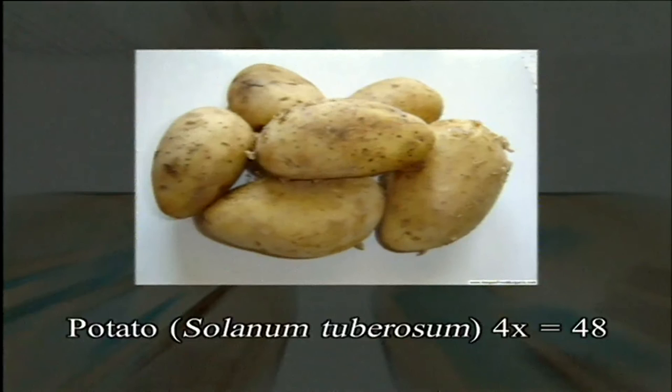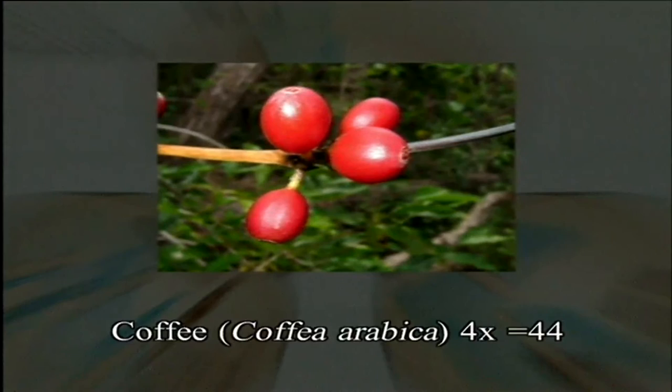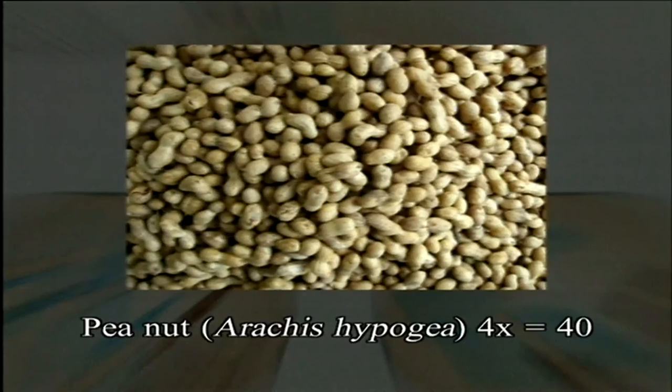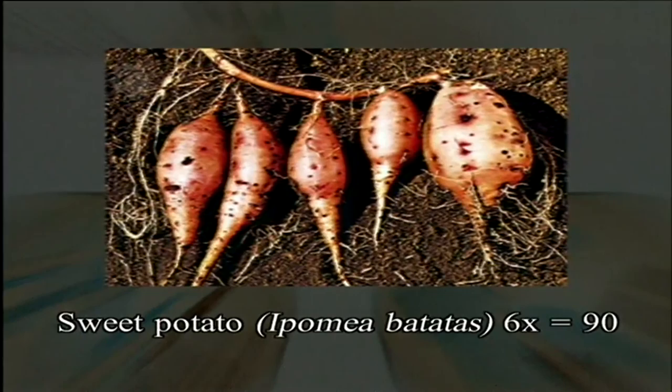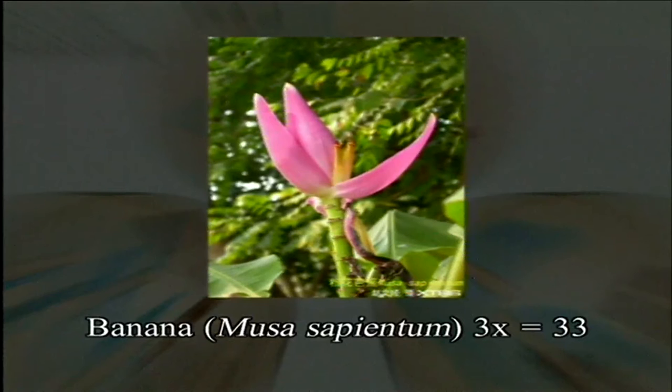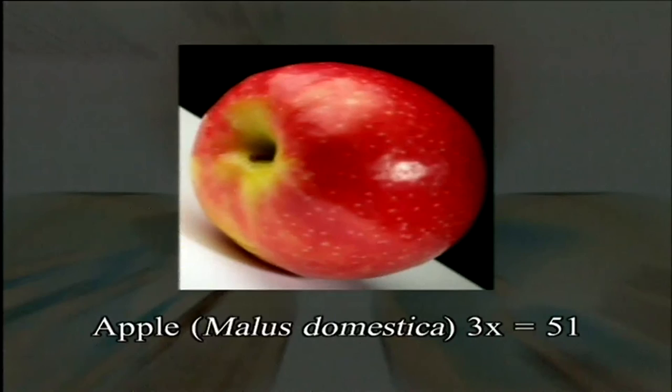Some examples of autopolyploids include: potato (4x = 48), coffee (4x = 44), alfalfa (4x = 32), peanut (4x = 40), sweet potato as an autohexaploid (6x = 90), banana as an autotriploid (3x = 33), and apple as an autotriploid (3x = 51).